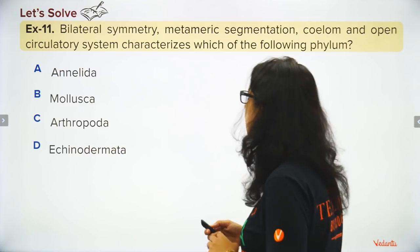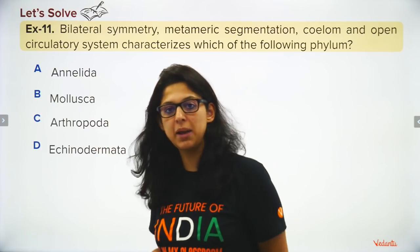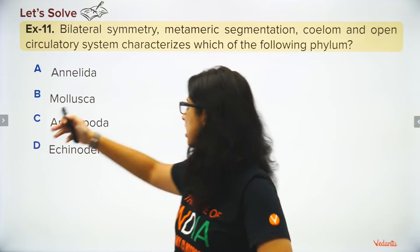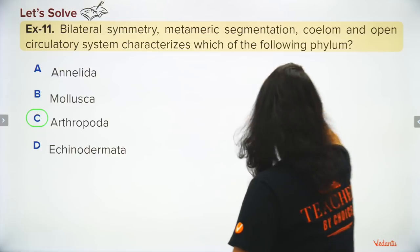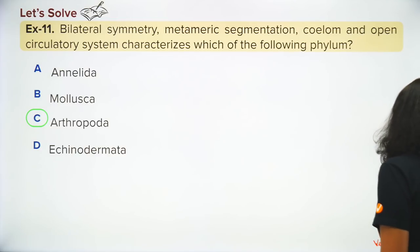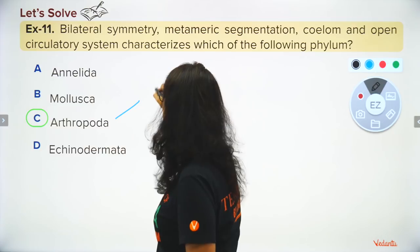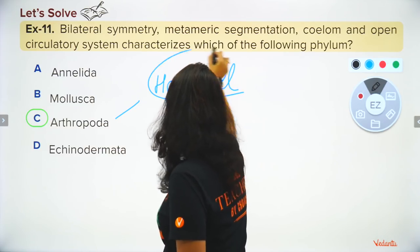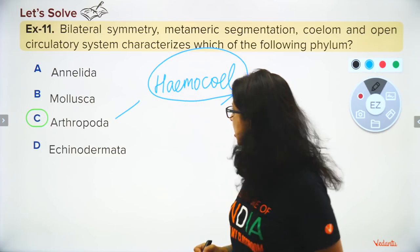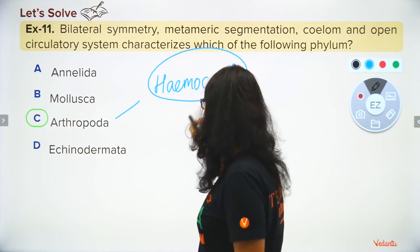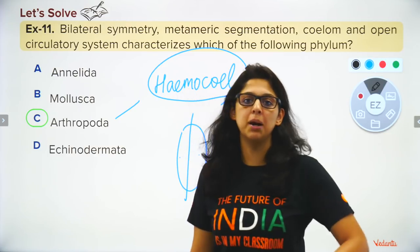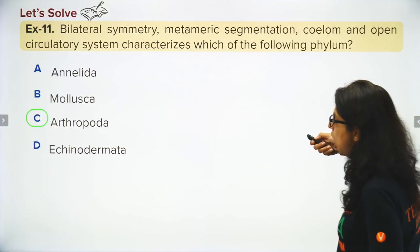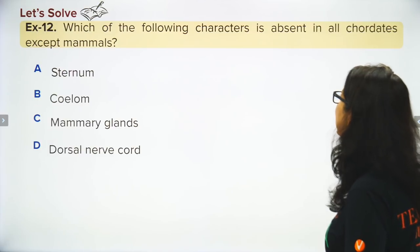Coelome and open circulatory system characterize the phylum Arthropoda. In an open circulatory system, the heart pumps fluid into the body cavity. In Arthropoda, there is a haemocoel — a coelome filled with blood. They have bilateral symmetry and metameric segmentation: the body is divided into head, thorax, and abdomen.